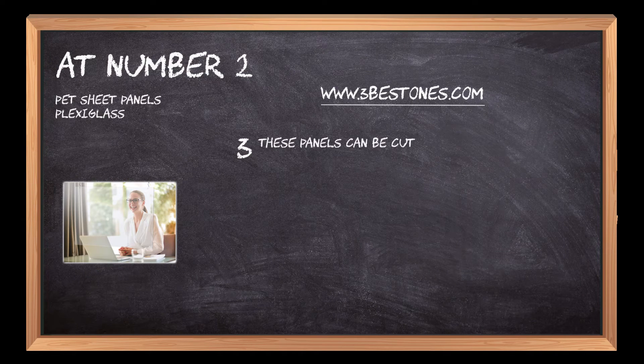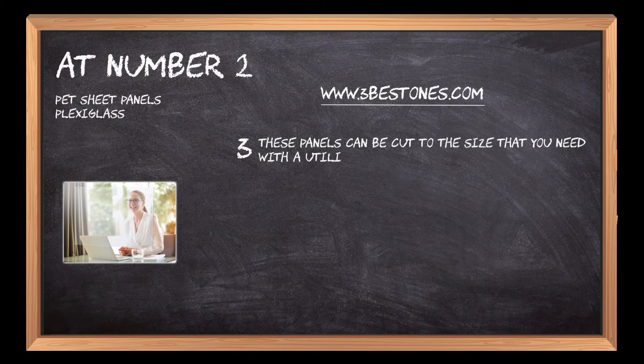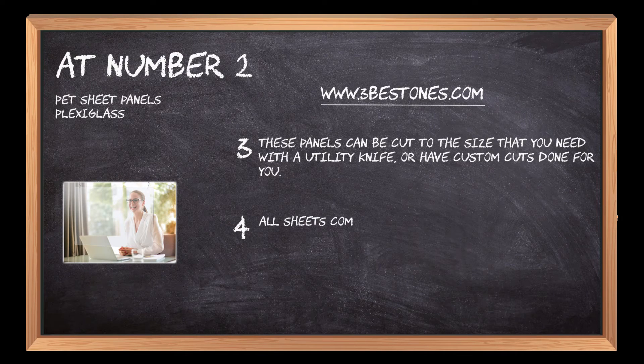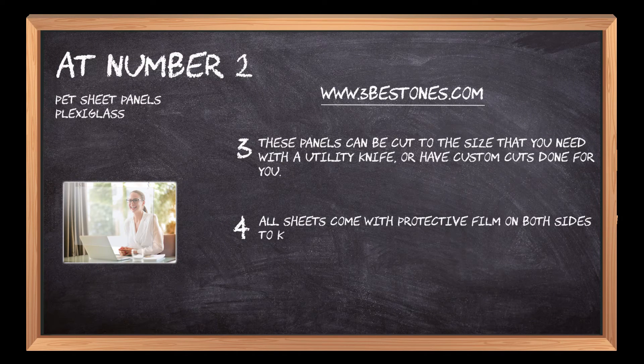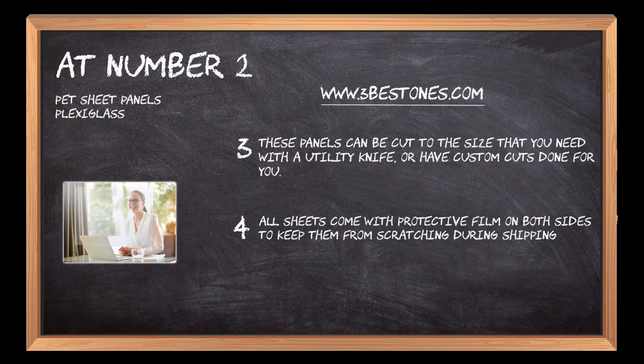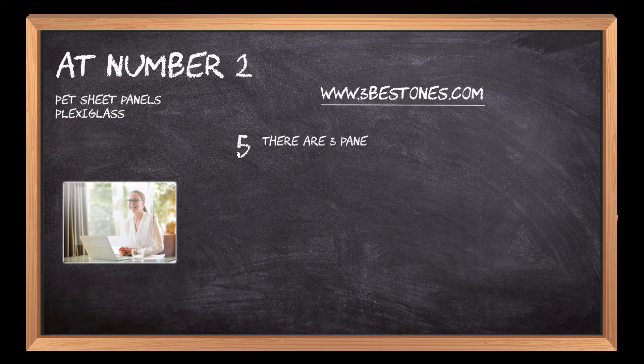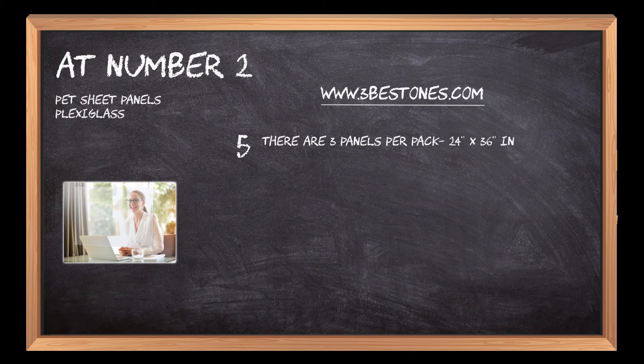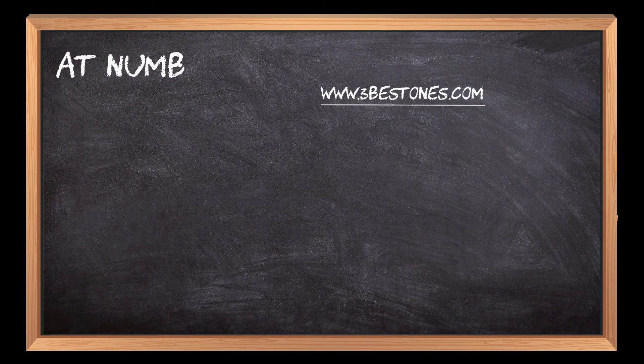These panels can be cut to the size that you need with a utility knife or have custom cuts done for you. All sheets come with protective film on both sides to keep them from scratching during shipping and handling. There are 3 panels per pack, 24x36 in size.